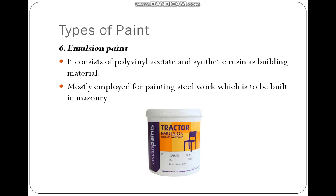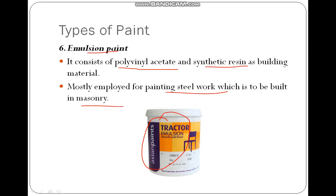Next is emulsion paint, which we are very familiar with. Asian Paints Tractor Emulsion is used for a smooth wall finish. It consists of polyvinyl acetate synthetic resin as a building material. It is most employed for painting steel works which are to be built into masonry.